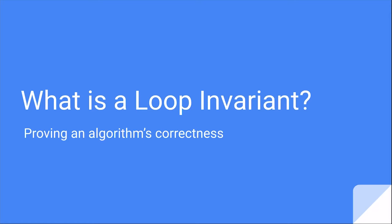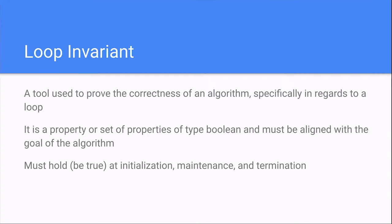What is a loop invariant? Proving an algorithm's correctness. A loop invariant is a tool used to prove the correctness of an algorithm specifically in regards to a loop. It is a property or set of properties of type boolean and must be aligned with the goal of the algorithm.